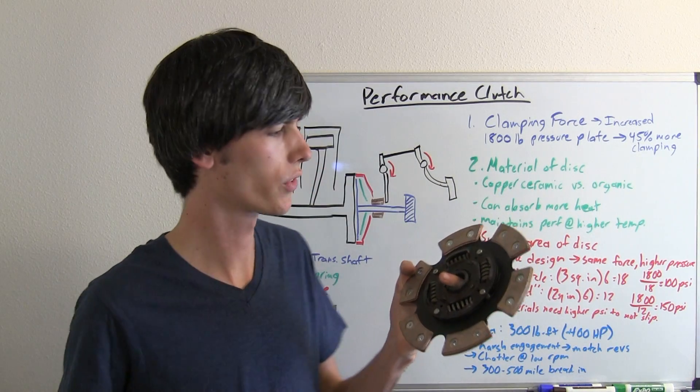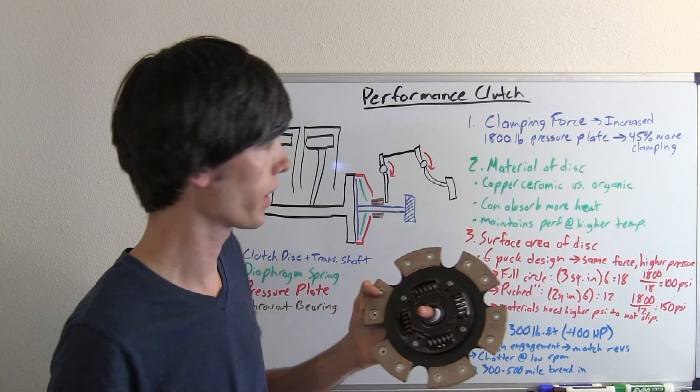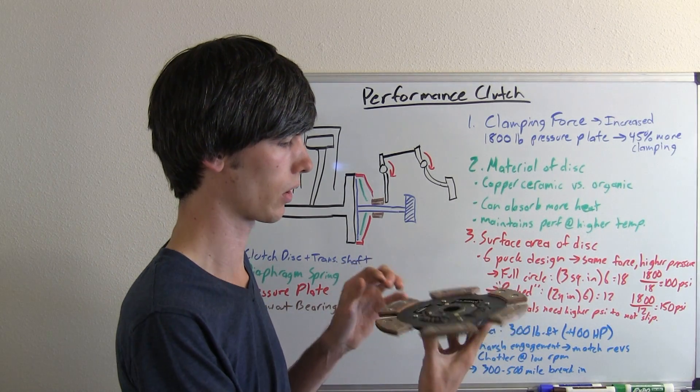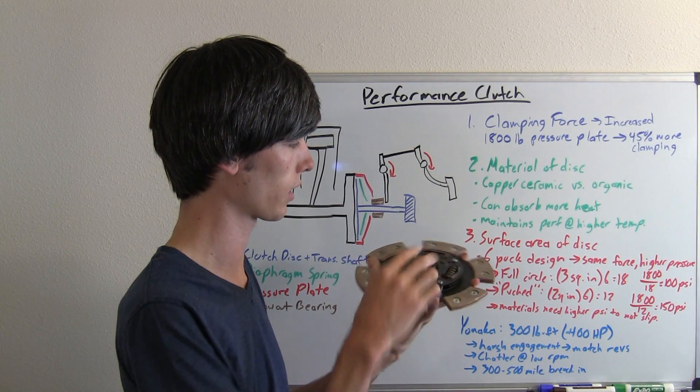The second thing that a performance clutch is going to have, different from an OEM style clutch, is the material of the disc. So this particular clutch, this Yonaka performance clutch disc,